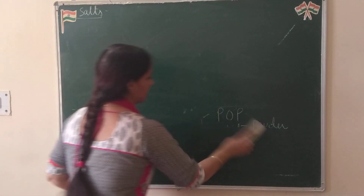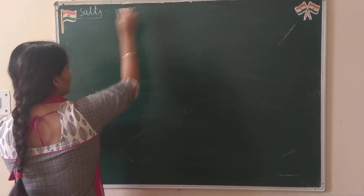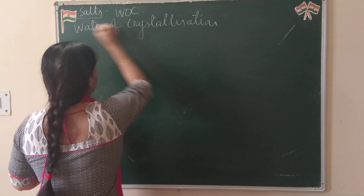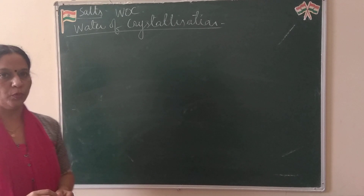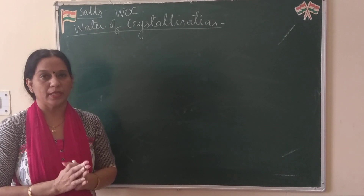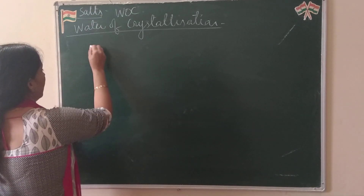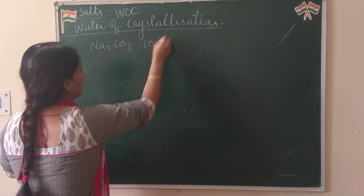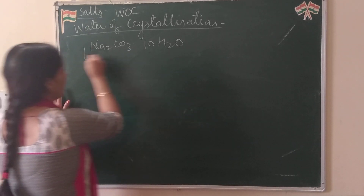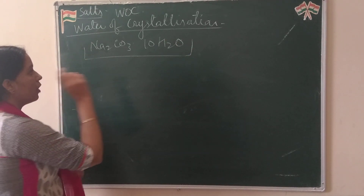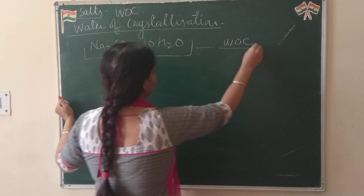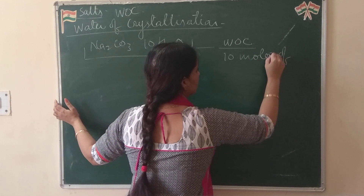The last topic of acids, bases and salts is water of crystallization, WOC. Water of crystallization is the fixed number of water molecules present in the unit formula of a salt. For example, Na2CO3·10H2O — washing soda. It has 10 molecules of water. For the formation of one unit formula of this salt, we need 10 molecules of water. This is called water of crystallization. The water of crystallization of washing soda is 10 molecules of water.